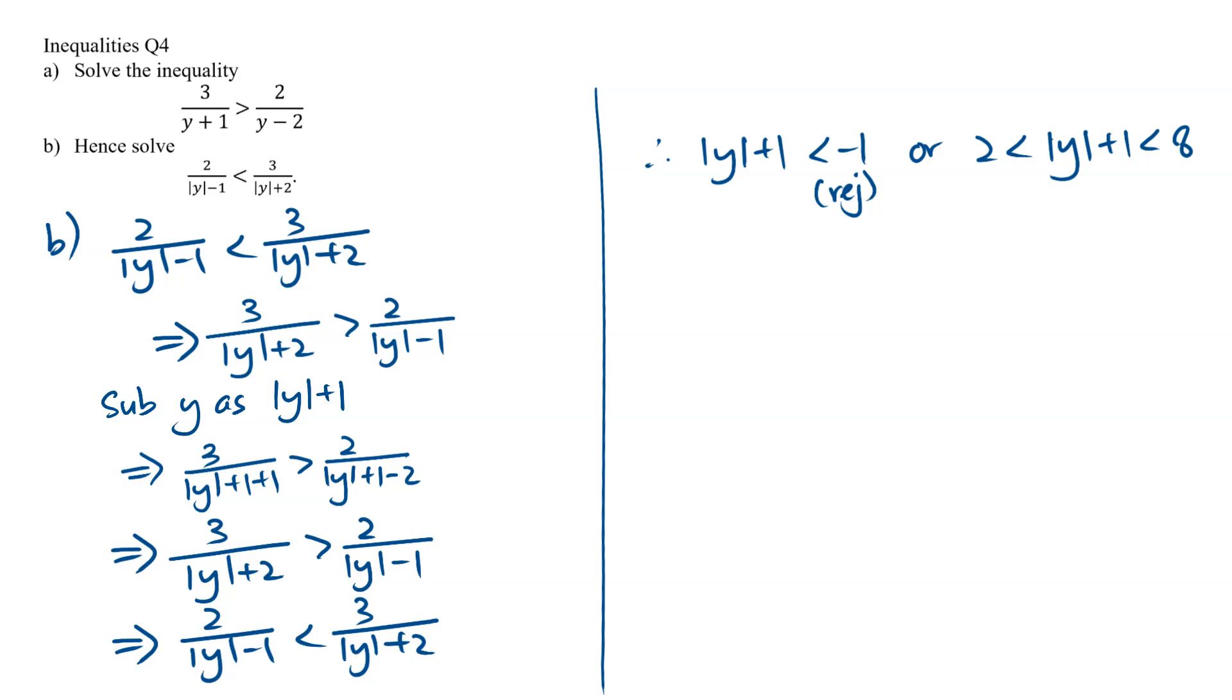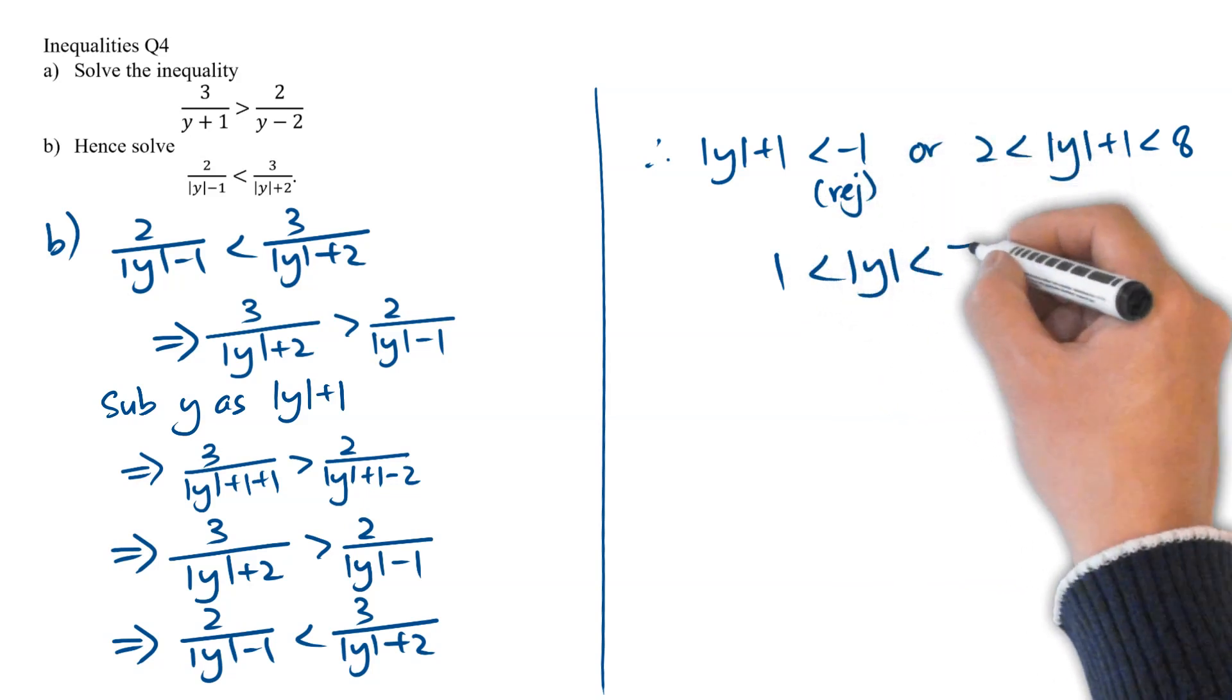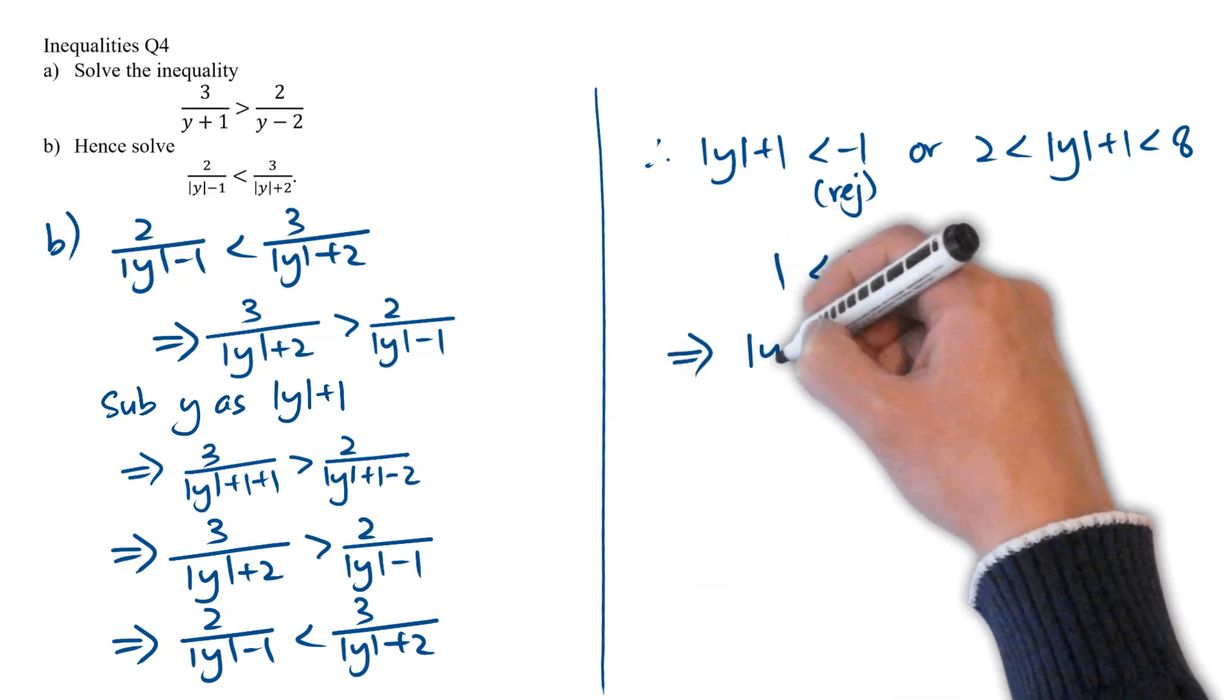Now, if we simplify the second inequality, we will end up with mod y between 1 to 7. And to solve this inequality, we have to break it up into two parts.